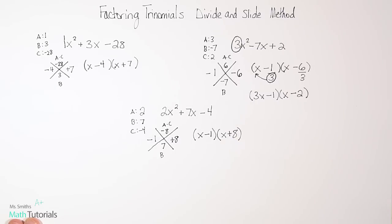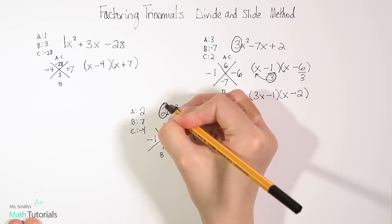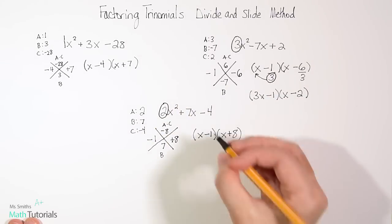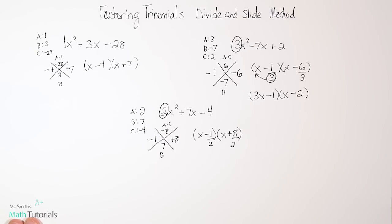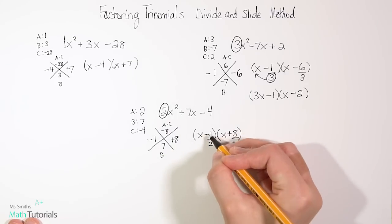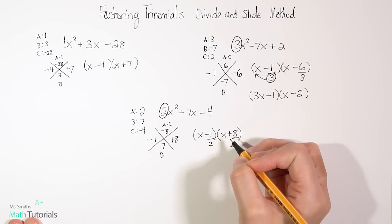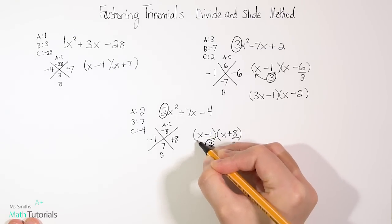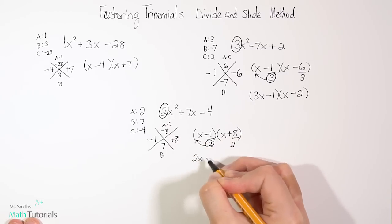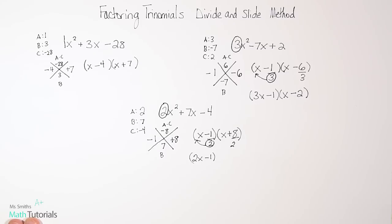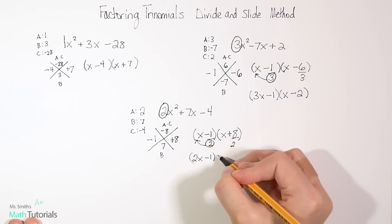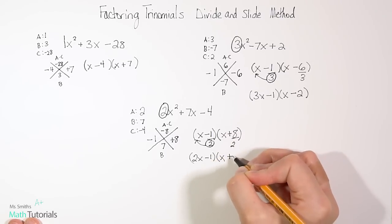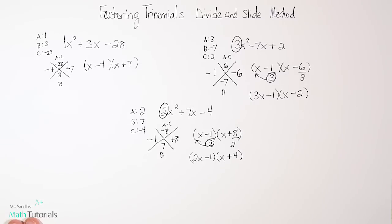Now we're not done because we've got this 2 here that we need to divide by. Our divide and slide. So we want to divide both of those new factors by 2. Now if we can reduce and get a whole number, great. If we can't, we've got to slide. So negative 1 half, well that's going to reduce and give me a decimal. So that means 2, you gotta slide. So we end up with 2x minus 1 right here. Now 8 divided by 2, that's going to give me a whole number. 8 divided by 2 is 4. So we go ahead and divide that one. 8 divided by 2 is a positive 4. So there are our factors.